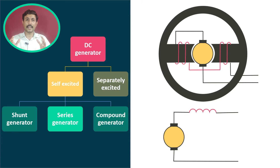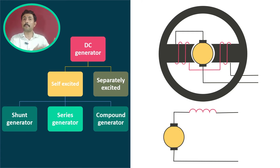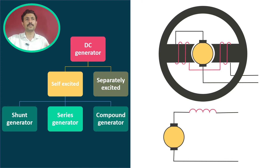If you want to understand with animations how all these DC generator functions work, I have prepared a separate animated video for that and the link is provided in the description box below or in the card above. Right now we'll quickly jump to the third type, which is the compound generator.